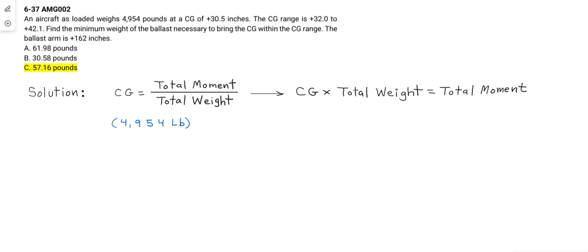We can simply multiply the loaded weight times the initial or original CG of positive 30.5 inches, and we compute positive 151,097 inch-pounds.